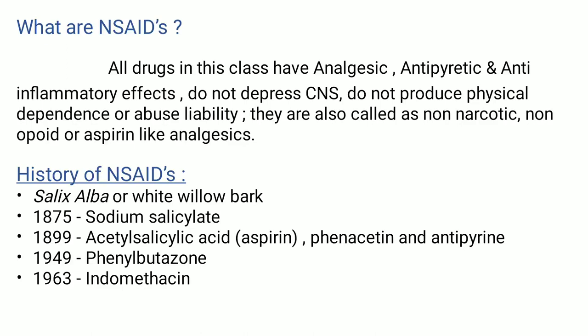The history of non-steroidal anti-inflammatory drugs: they are obtained from Salix Alba or White Willow Bark. Firstly, it was discovered in 1875, when sodium salicylate was used. Then in 1899, acetyl salicylic acid — aspirin — phenacetin and antipyrine were used. Then in 1949, phenylbutazone was produced, which was a major development. Then in 1963, indomethacin was introduced.